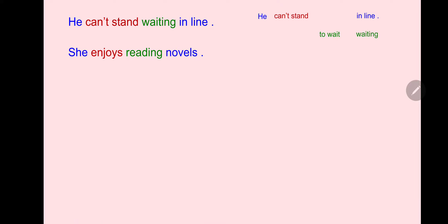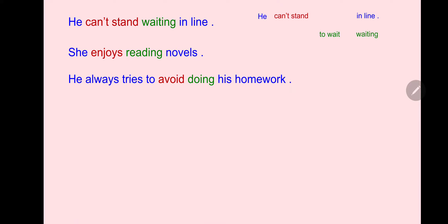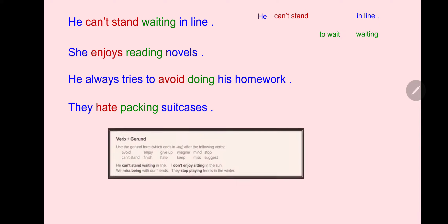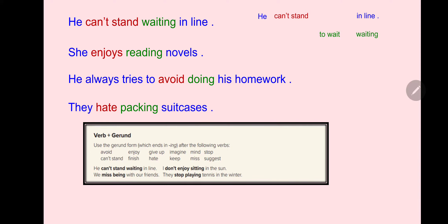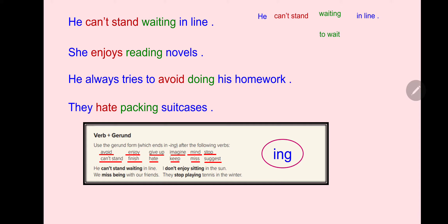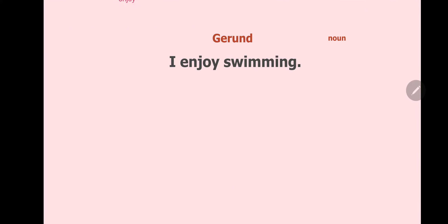Verbs followed by gerund: He cannot stand waiting in the night. She enjoys reading novels. He always tries to avoid doing his homework. They hate packing suitcases. The verbs in this group are: avoid, enjoy, give up, imagine, mind, stop, can't stand, finish, hate, keep, miss, suggest. When any of these verbs come and are followed by another verb, that verb must take -ing.